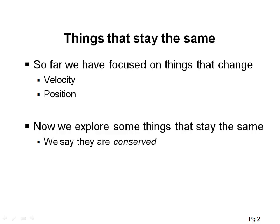To date in class, we've dealt mostly with things that have been changing — the velocity has been changing, the position has been changing — and trying to predict how these things will change. Now we're going to explore some things that stay the same in the next couple of chapters. In physics and in science, when something stays the same, we say that it's conserved.